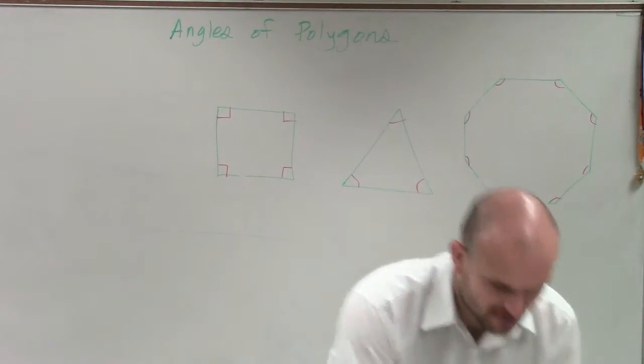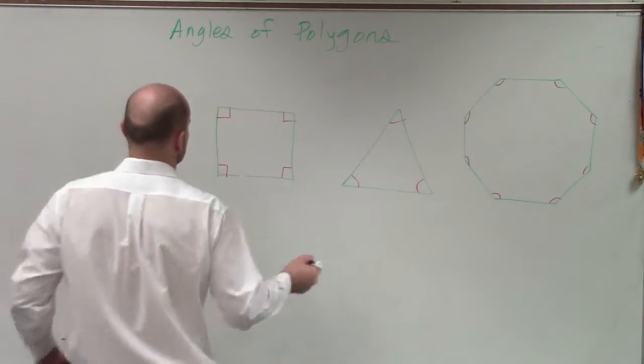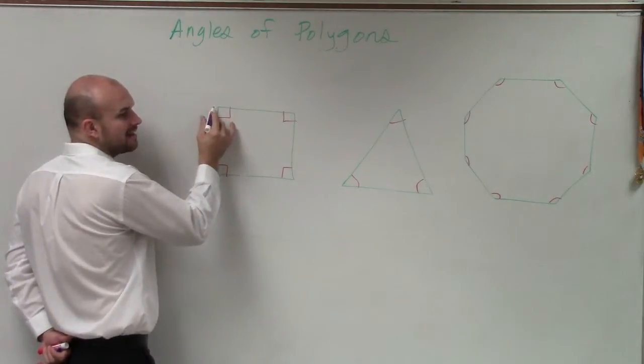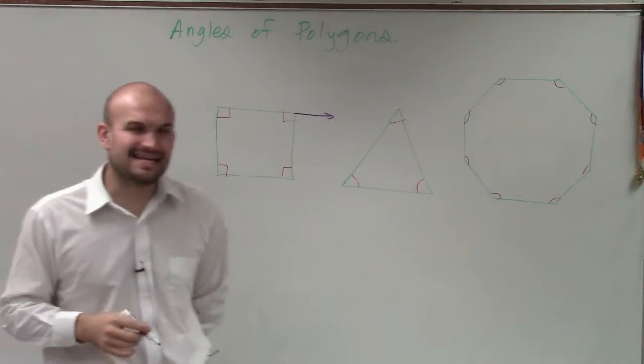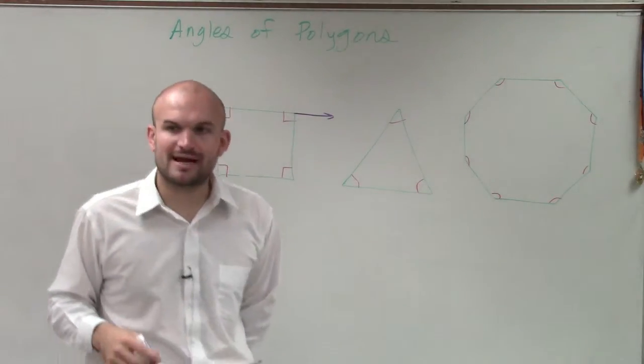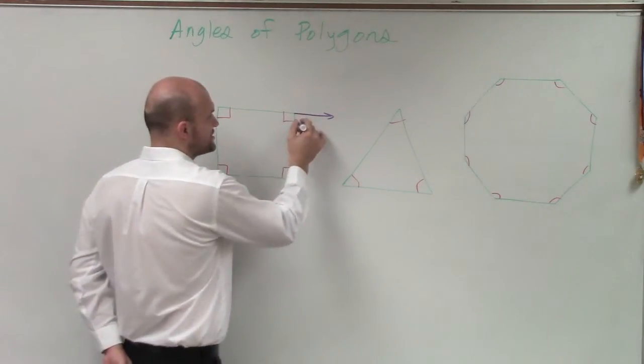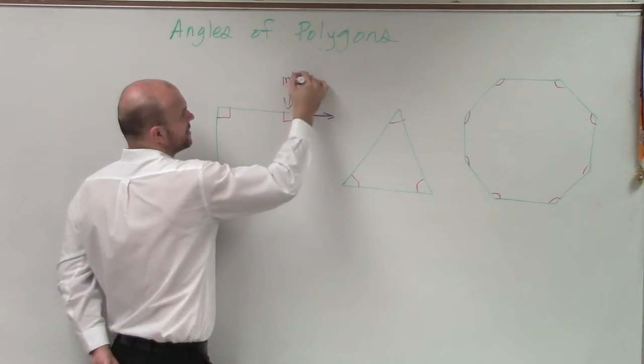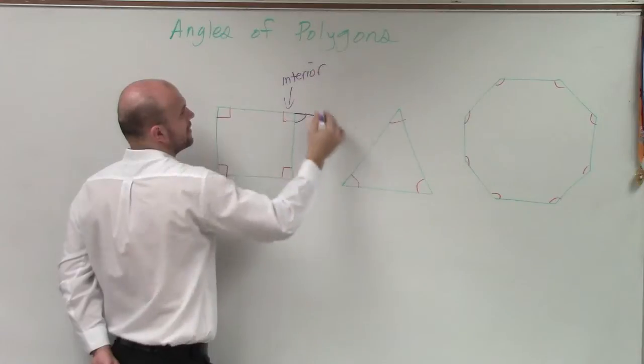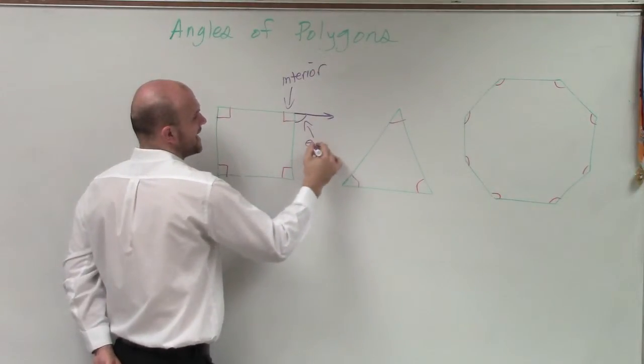I'll use purple. So if I have a side, I'm going to extend it. By extending it, what I've just created is an exterior angle. That is what we call an interior angle, and that is what we call an exterior angle.